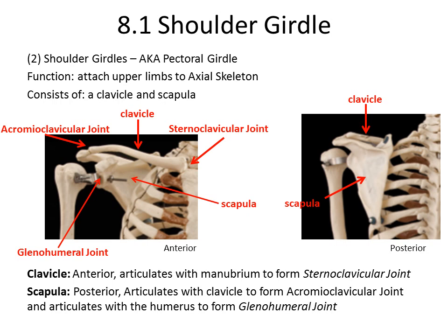When we look at the posterior view of the shoulder girdle, we can see a very nice view of the entire scapula and part of the clavicle sticking out from the anterior aspect. The clavicle is the anterior aspect of the shoulder girdle and articulates with the manubrium to form the sternoclavicular joint. The scapula is the posterior aspect and articulates in two places: with the clavicle to form the acromioclavicular joint, and with the humerus.